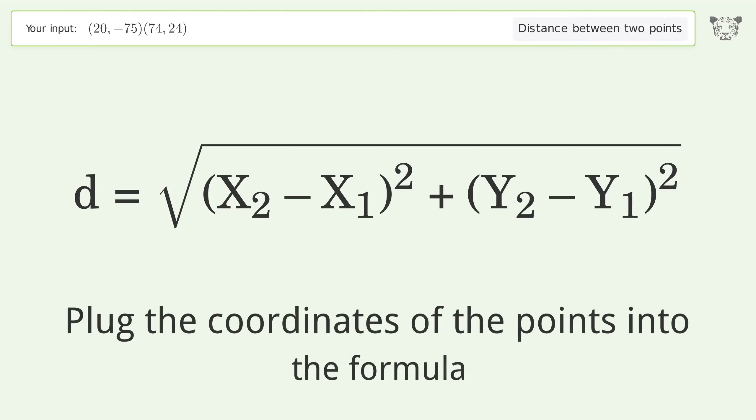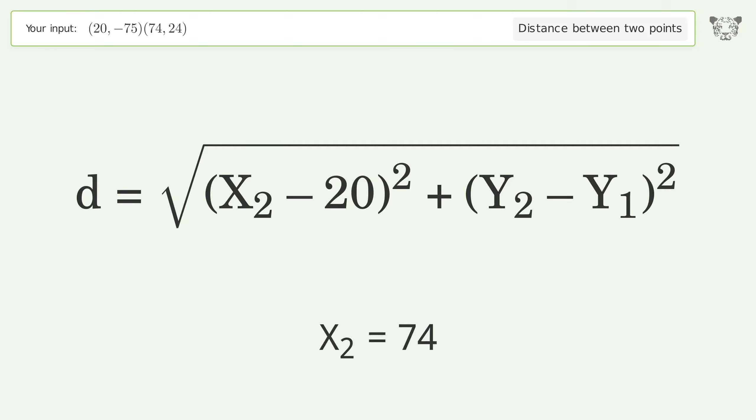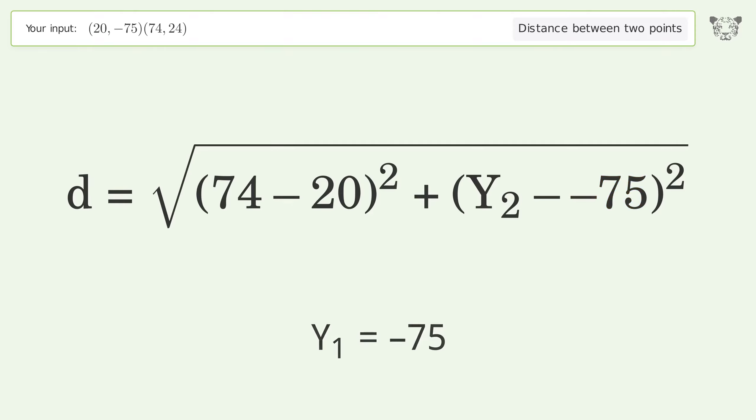Plug the coordinates of the points into the formula. x1 equals 20, x2 equals 74, y1 equals negative 75, y2 equals 24.